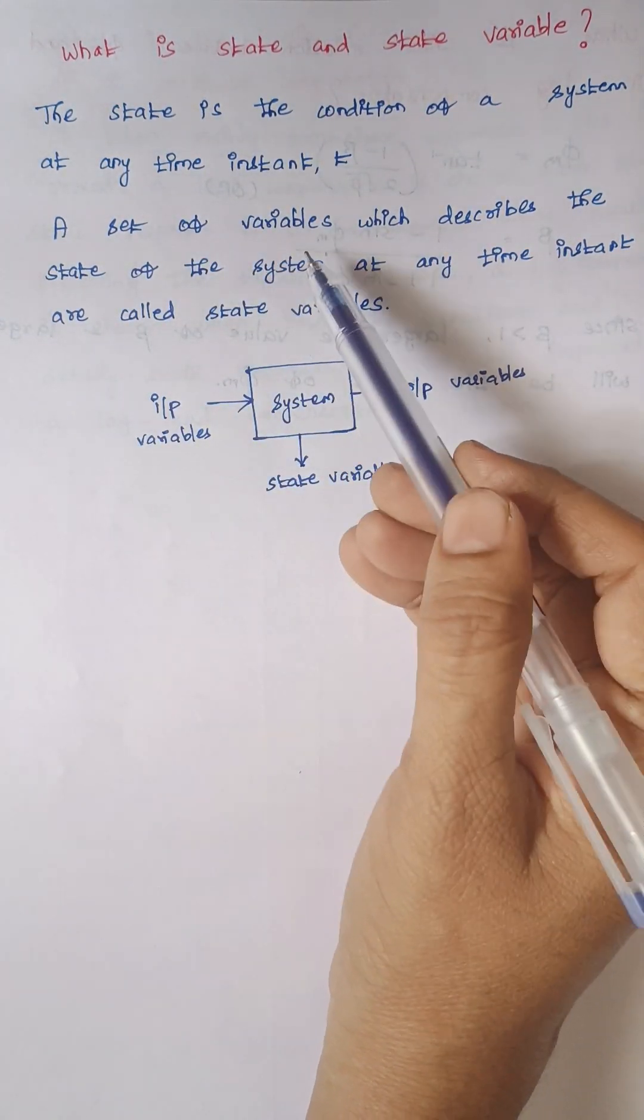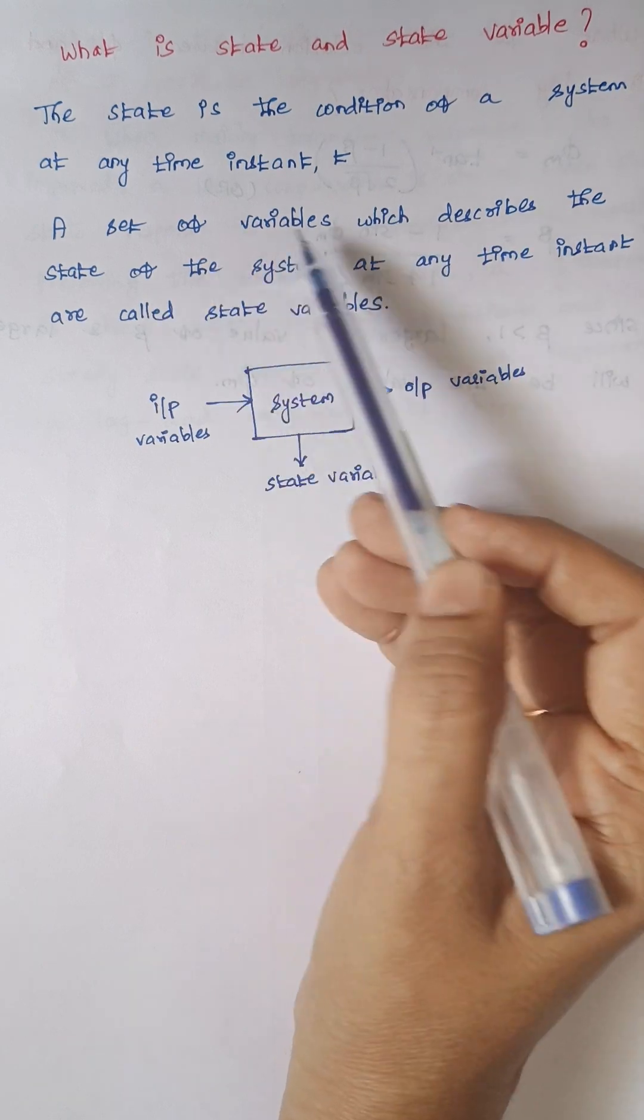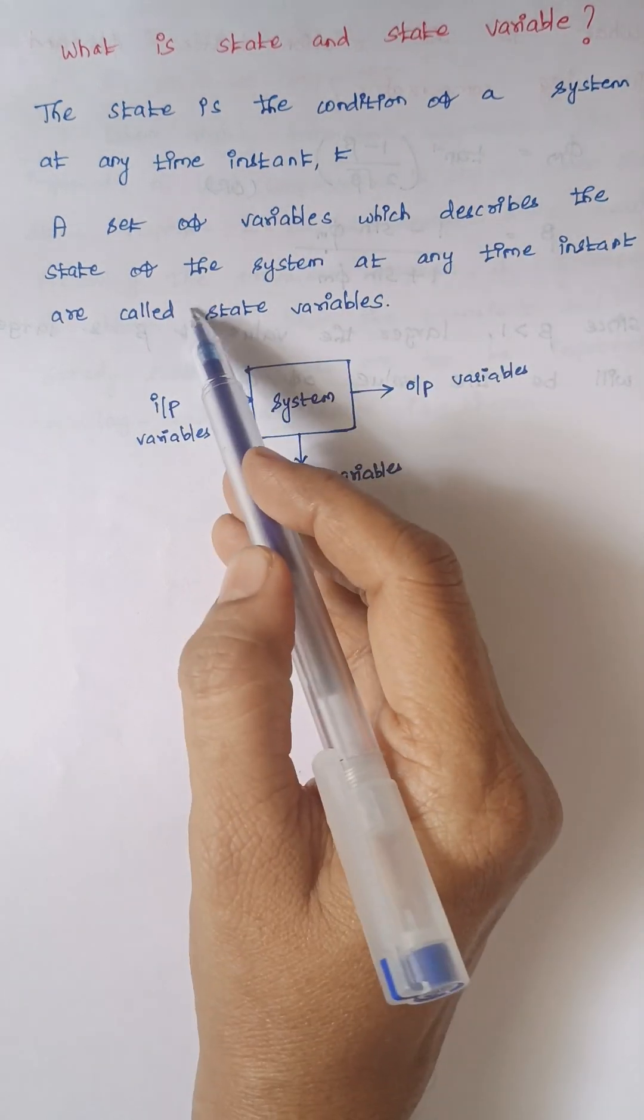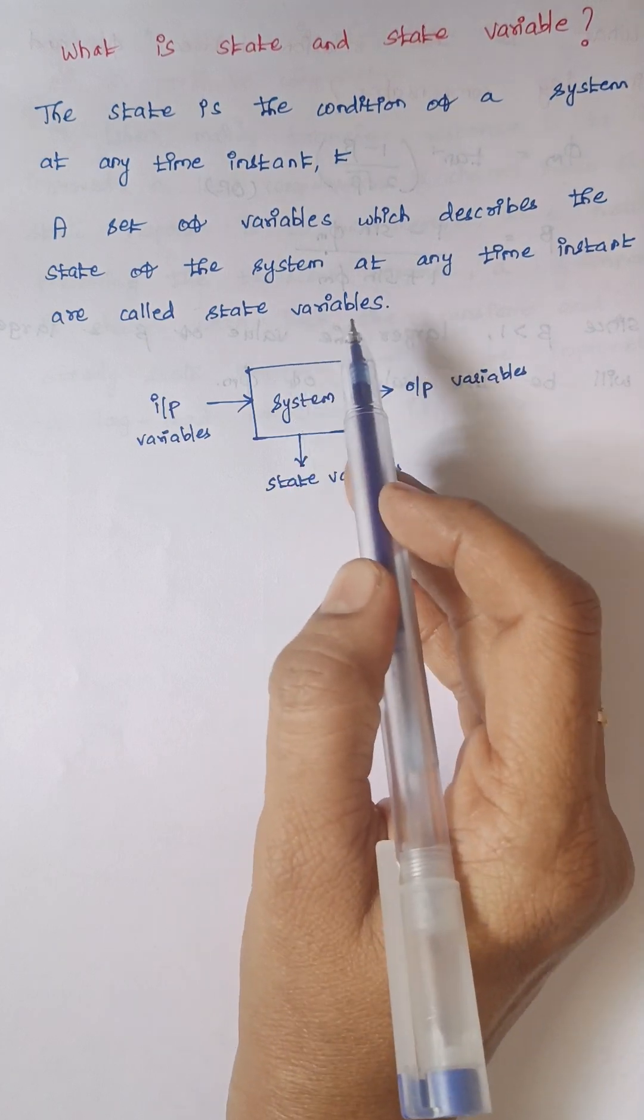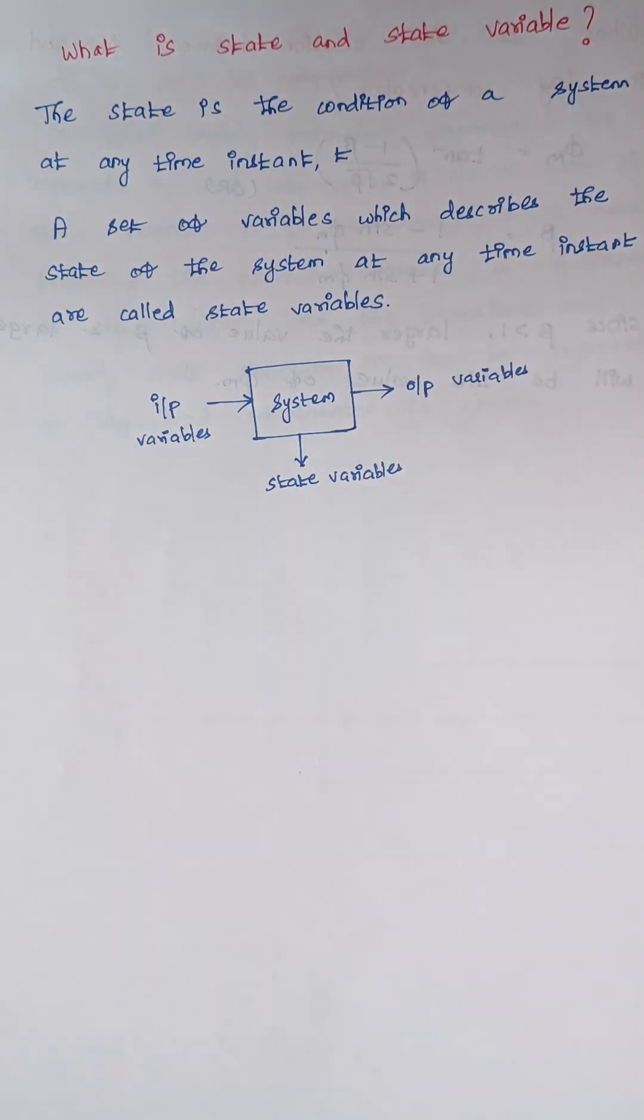The next one is state variable. A set of variables which describes the state of the system at any instant are called state variables. The state of a system is represented in terms of variables.